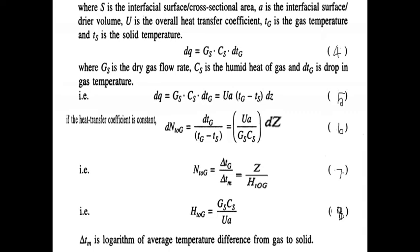In equation 5, the heat transfer coefficient capital U is constrained. Rearranging: DTG divided by (TG minus TS) equals UA divided by (GS times CS) times DZ. Now we apply the concept of HTU and NTU, where HTU times NTU equals Z — that is, Height of Transfer Unit times Number of Transfer Unit equals height of the tower.